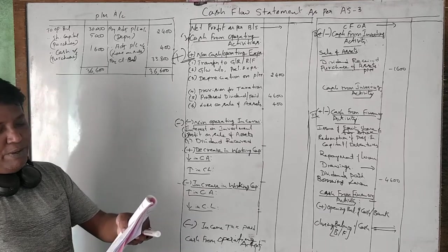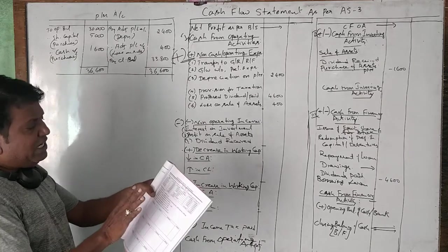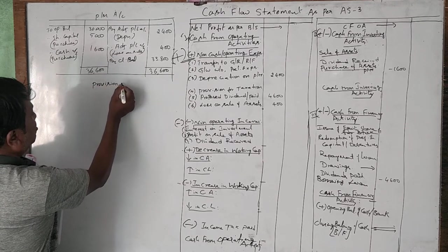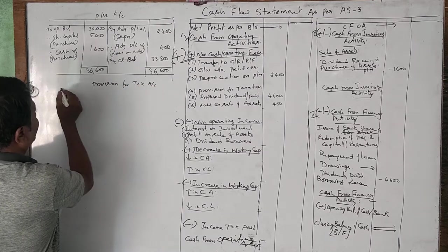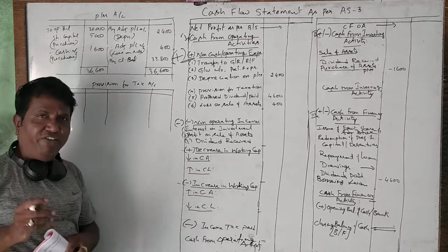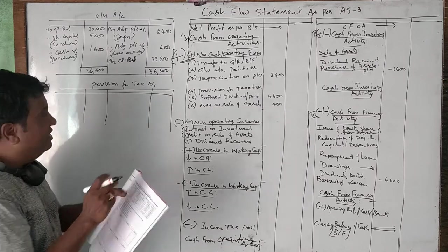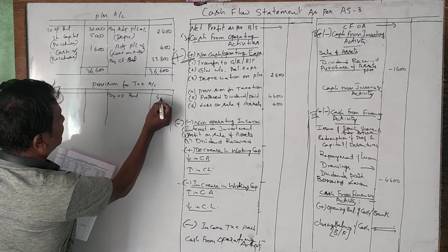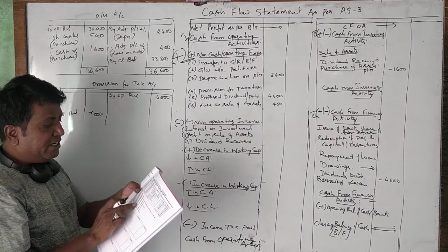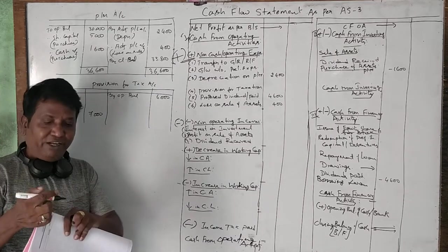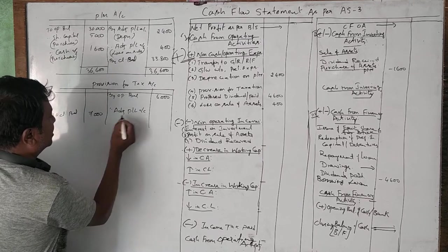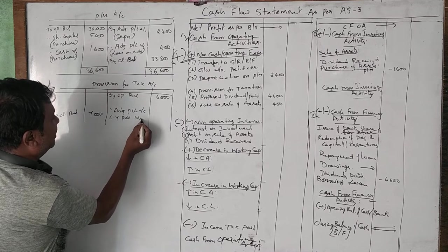Looking at the fifth adjustment — income tax is provided, not paid. If you look at the balance sheet, we have provision for tax. Whenever provision for tax appears in the balance sheet and there is an adjustment related to tax, we have to prepare an account for tax. Provision for tax is a liability. Opening balance is 6,000 and closing balance is 7,000. Income tax provided means we have set aside 7,000 for payment of taxes in the next year, so the adjusted profit and loss account shows current year provision made as 7,000.